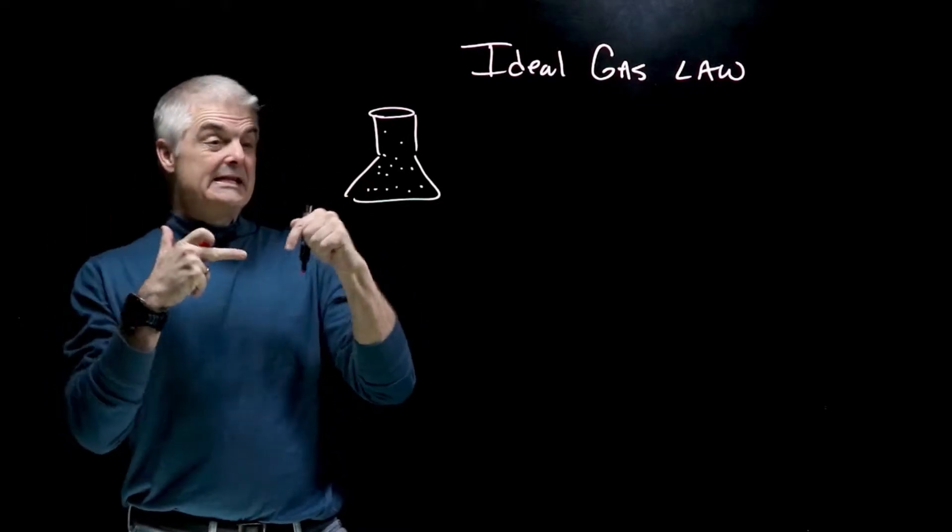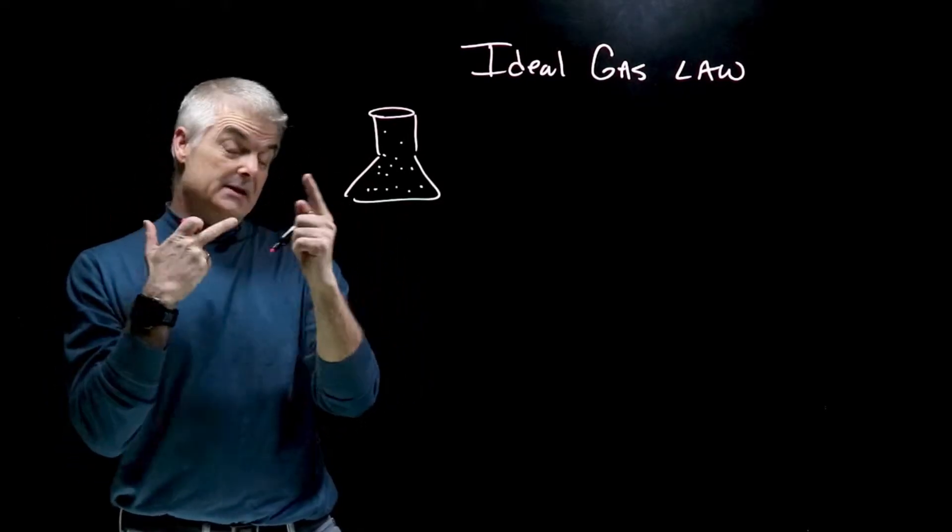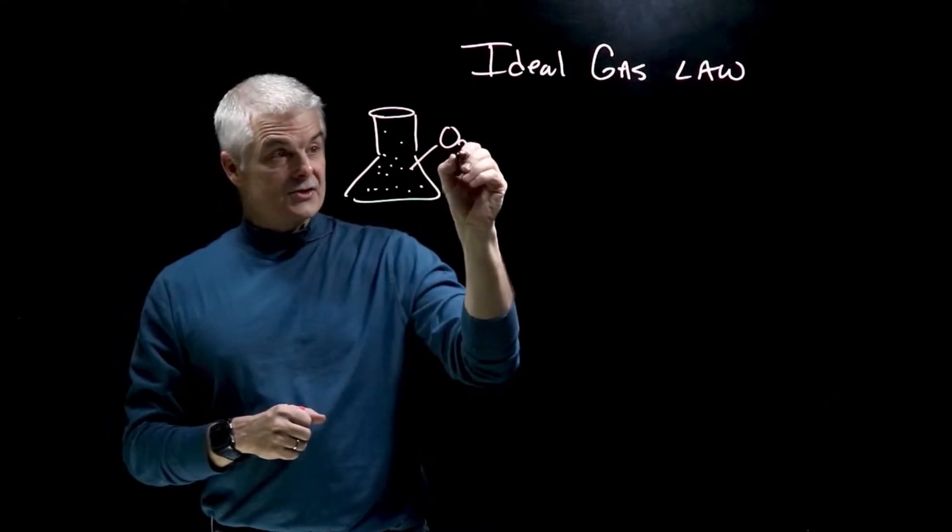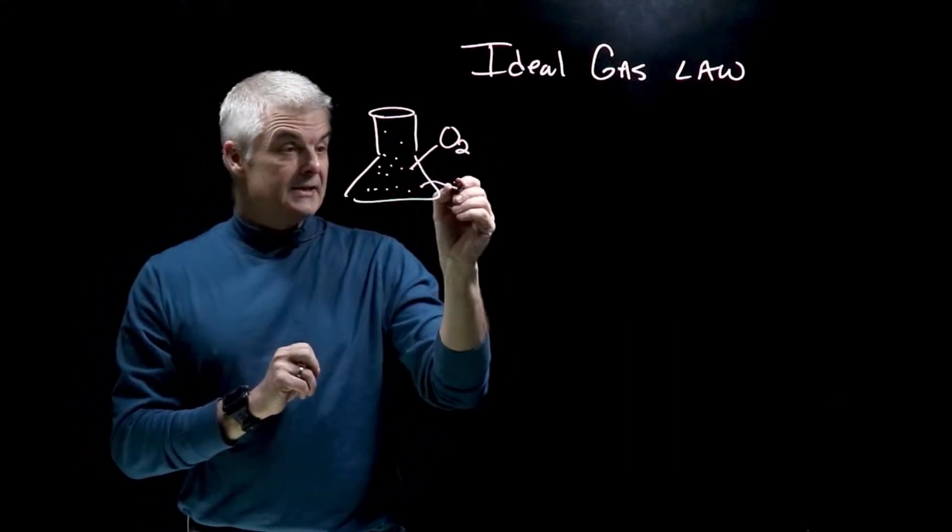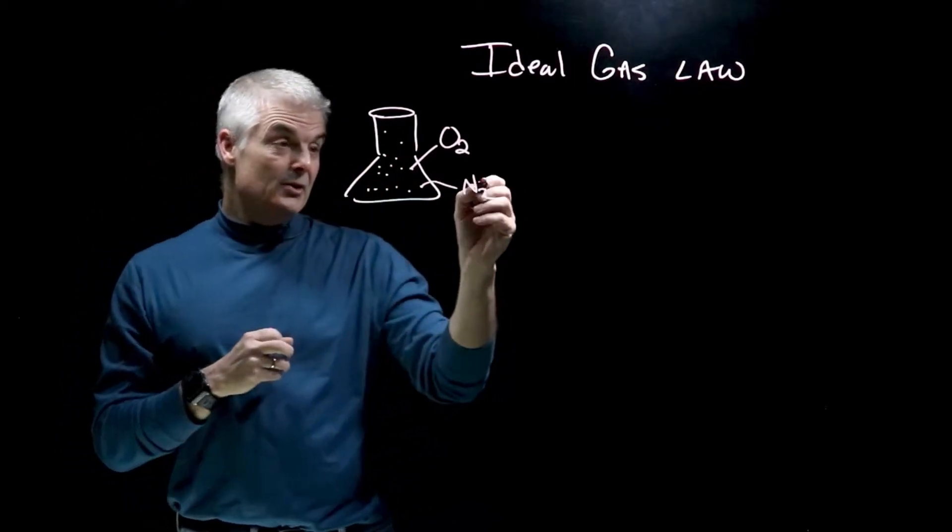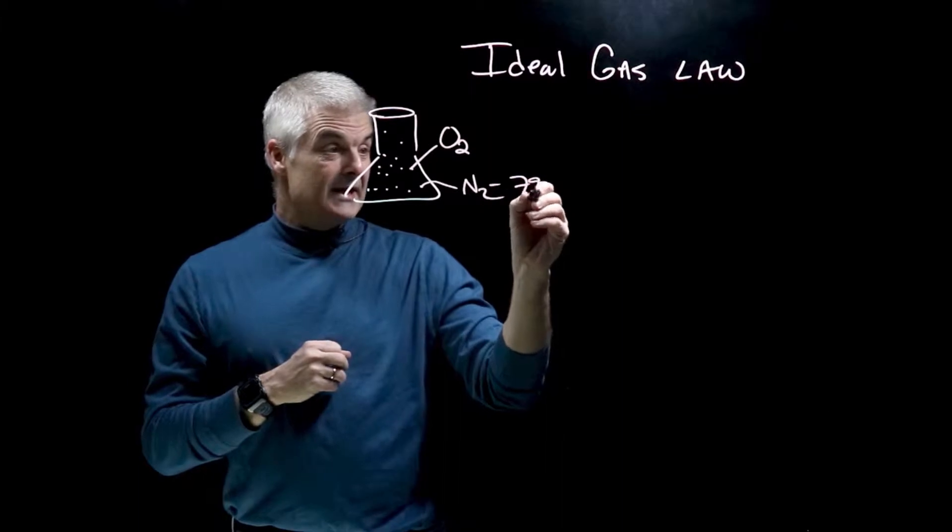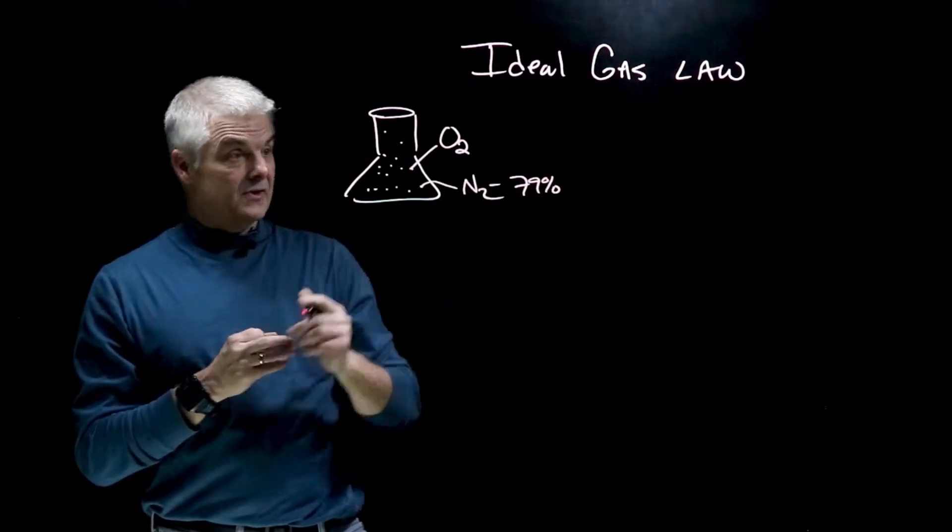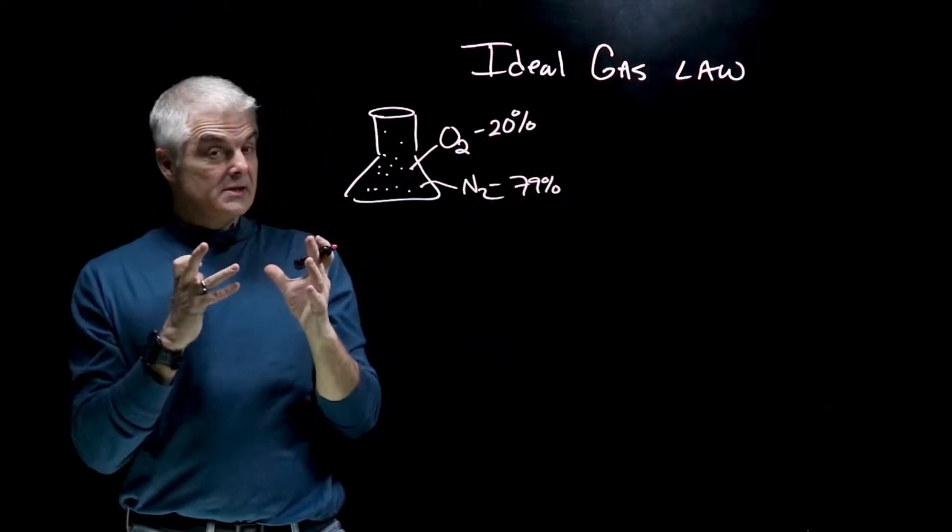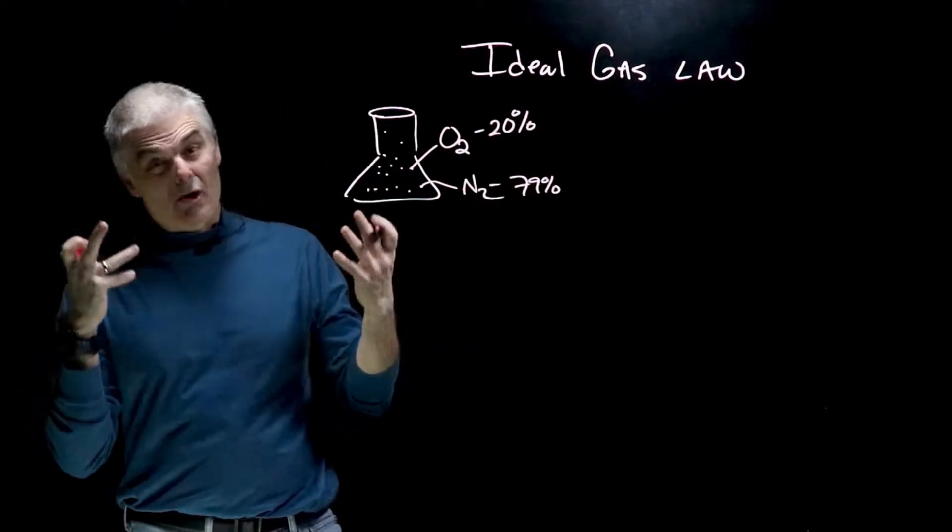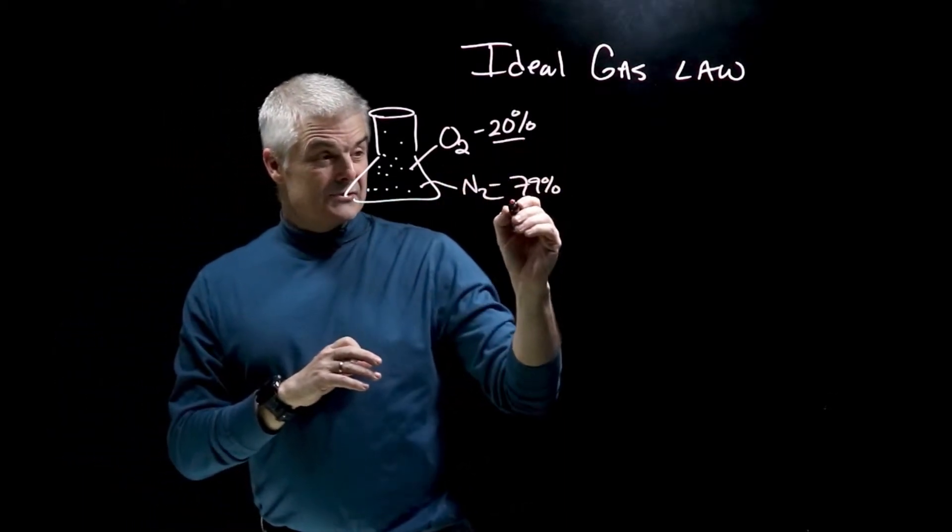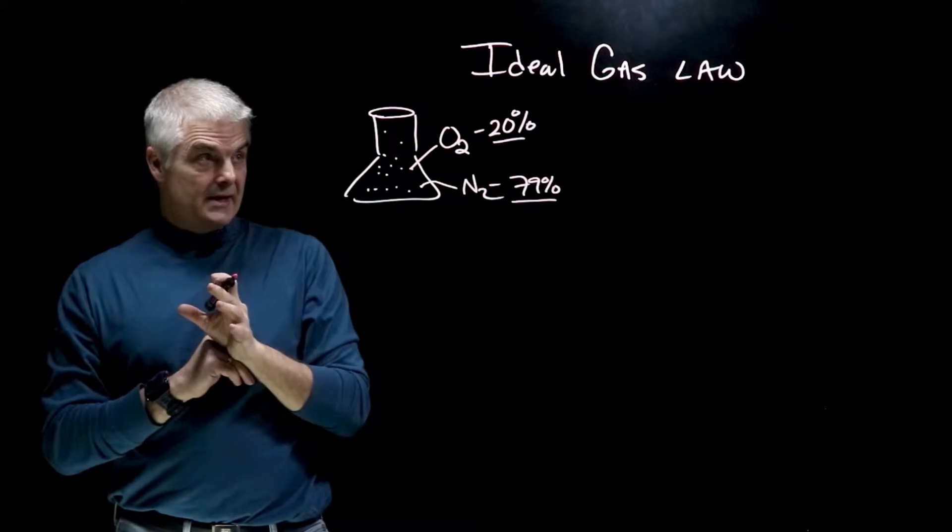But just as a note, what is in the flask, specifically besides gas particles? Well here on Earth, primarily we find oxygen. Remember O2, it's a diatomic molecule, and N2. And most people think the air is filled with oxygen. But you may not know this but nitrogen is 79% of the atmosphere. Oxygen is about 20% of the atmosphere. And there's about 1% of gases that are other gases. Carbon dioxide, methane and many other gases. So most of our atmosphere is actually nitrogen gas.